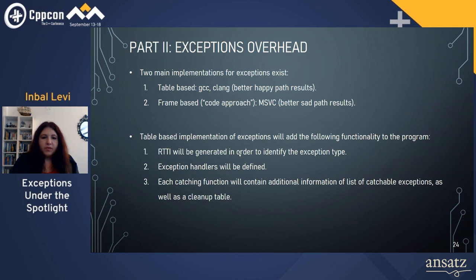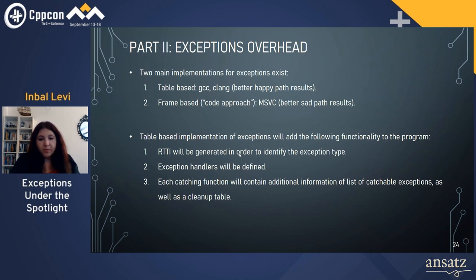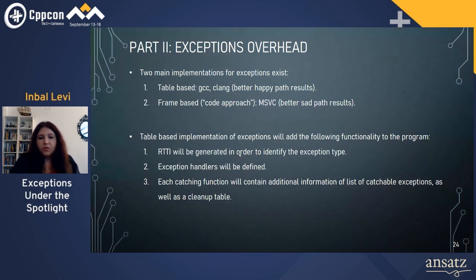Two main implementations for exceptions exist. The first is table-based, which is what GCC and Clang use, and it's better for happy-path results. The second is frame-based, also called the code approach, which MSVC uses — this is better for sad-path results. I focused on GCC because that's the platform I mainly work with, and also because optimizing for the happy path makes more sense to me.